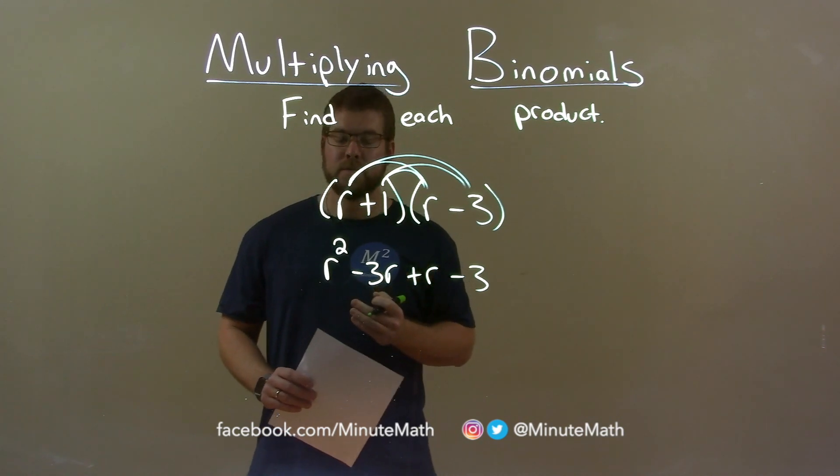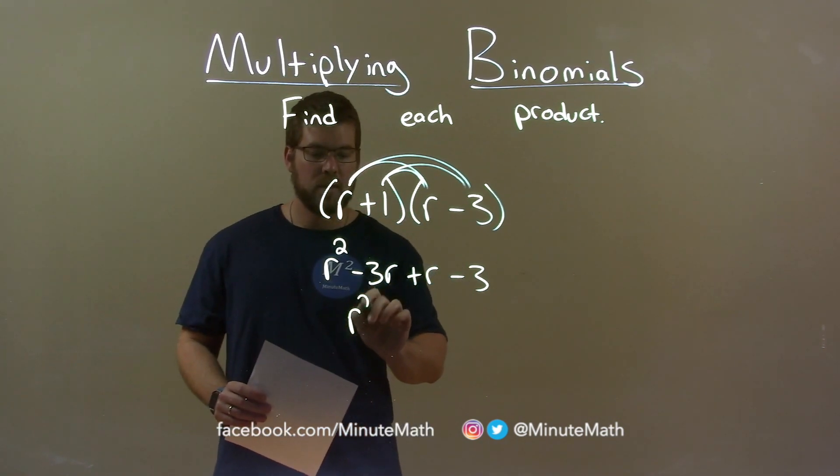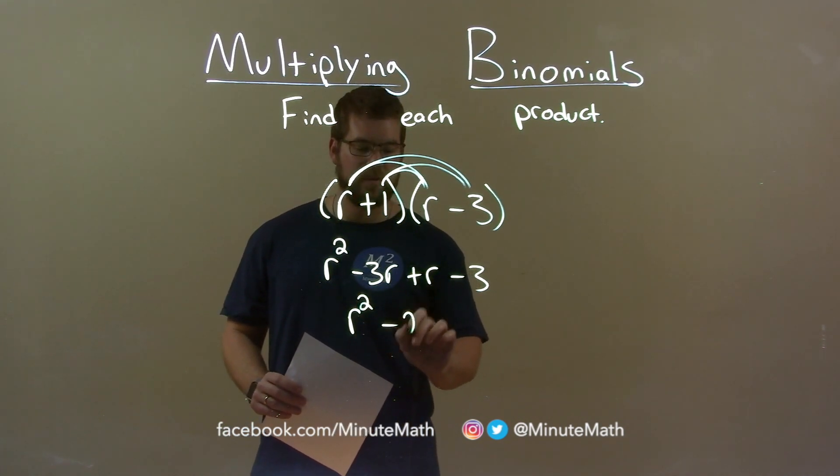Now we want to combine our like terms, which is just the ones in the middle, the r's. So the r squared comes down, and minus 3r plus 1r is minus 2r.